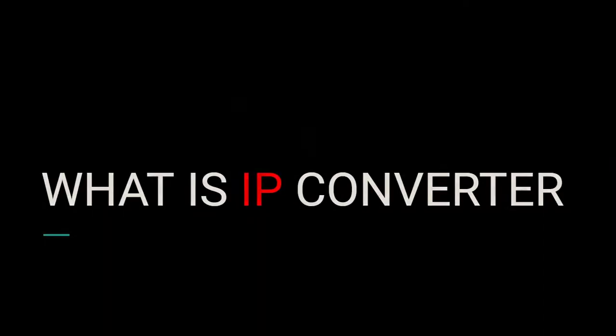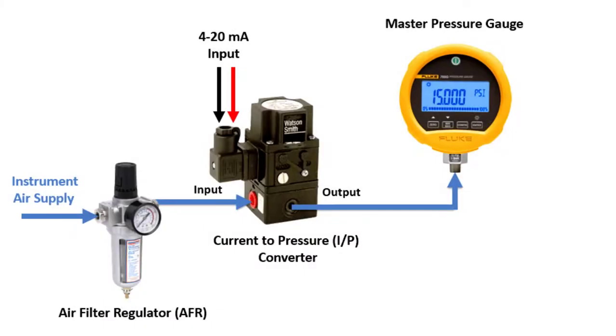Now let's check what is an IP converter. IP converter is a main part of a control valve. It will control the air supply from the compressor to the valve, proportional to the current feed.